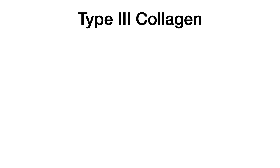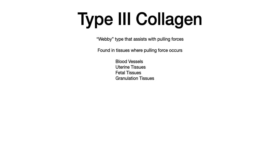Type 3 collagen is a little bit more complex. Type 3 collagen is the webby type of collagen, and it's there to assist with pulling forces. Unsurprisingly, it's only found in tissues where pulling forces occur: blood vessels, uterine tissues, fetal tissues, and granulation tissues. If you think about the role that each of those tissues performs, it should be no surprise that type 3 collagen assists in the natural pulling that occurs in each of them.